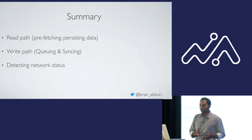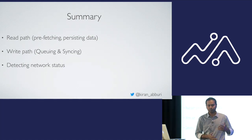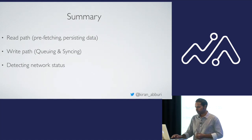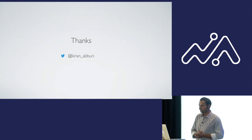To summarize: we covered the read path — prefetching and persisting data — and the write path — queuing mutations and syncing them to the server when back online. We also discussed detecting network status and the different conditions to check. Add service workers to handle code assets, and you'll have a fully functional offline-first app. That's all I have — thanks.